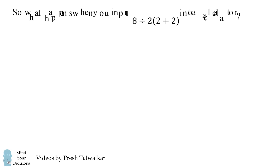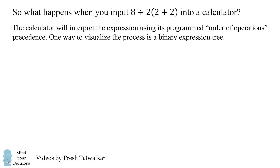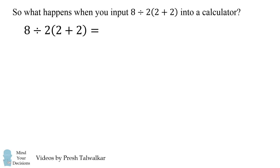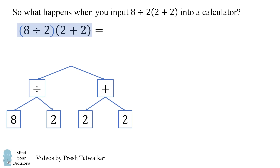So how would calculators parse this expression? The calculator will use its own programmed order of operations, and one way to visualize this is a binary expression tree. We parse the expression into binary expressions, taking two things at a time. Most calculators will do this: one subtree will be 8 divided by 2, another subtree will be 2 plus 2, and then we multiply these two results to get the answer of 16.